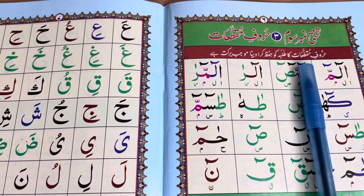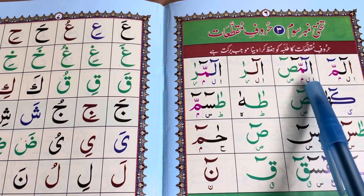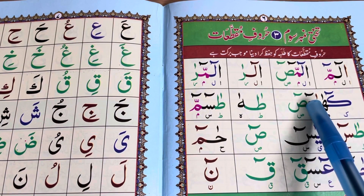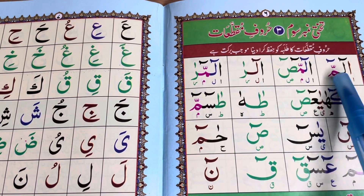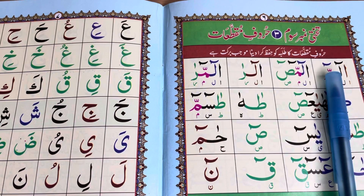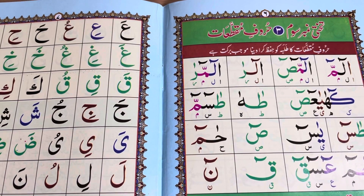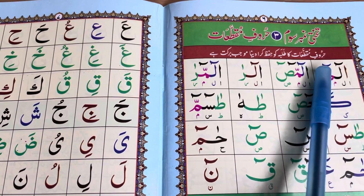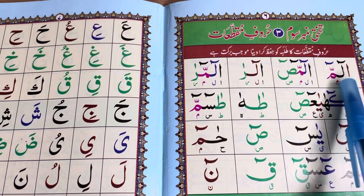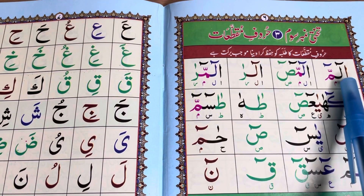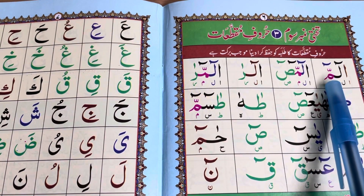If someone asks you what this symbol is called, it is called Mud, and the job of Mud is to make the letter longer for five seconds. If someone asks what this symbol is — the one that looks like a 'W' — it is called Shad. Whenever it comes, you connect that letter with the previous one, and the listener knows because you hold the sound of that letter for two seconds.